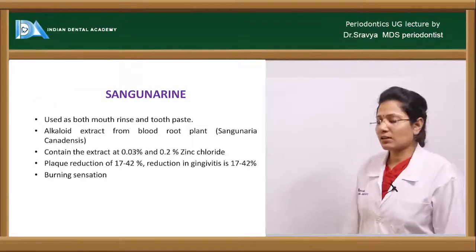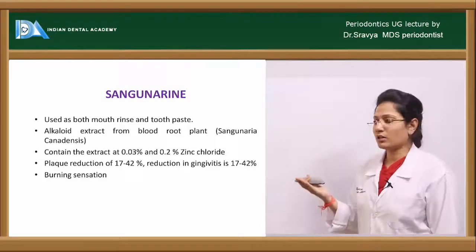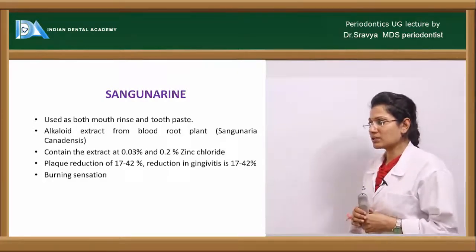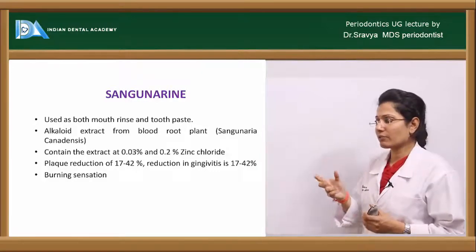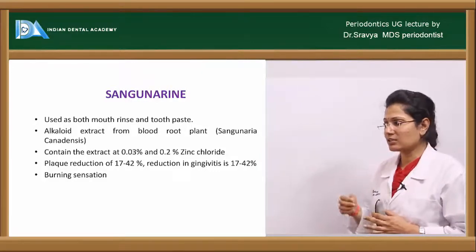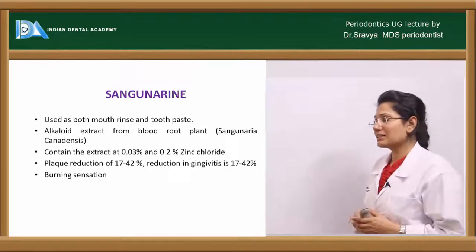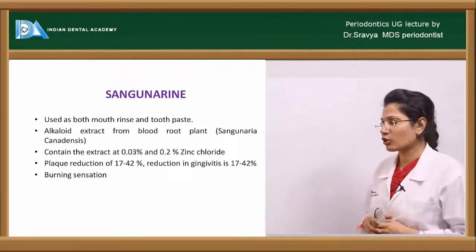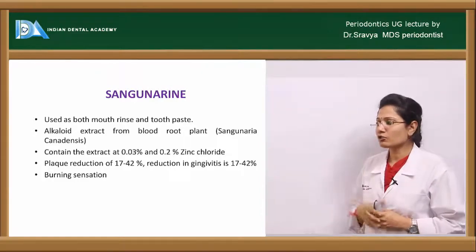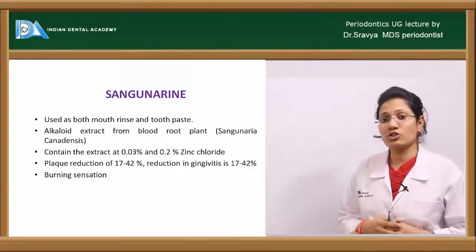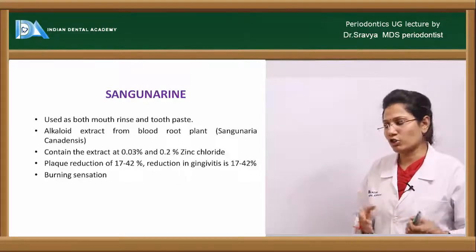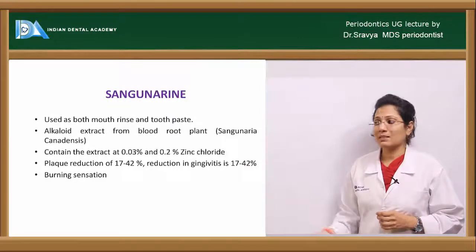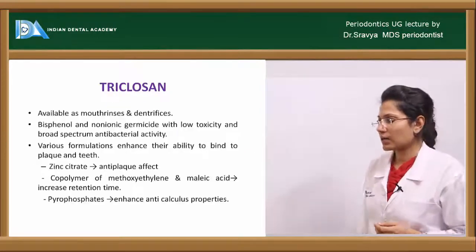Sanguinarine is a herbal extract and a cationic molecule used as both a mouth rinse and toothpaste. It is an alkaloid extract from the bloodroot plant, Sanguinaria canadensis, containing 0.03% extract and 0.2% zinc chloride. It achieves plaque and gingivitis reduction of about 17 to 42%, but creates a burning sensation. It is classified as a first-generation anti-plaque agent.